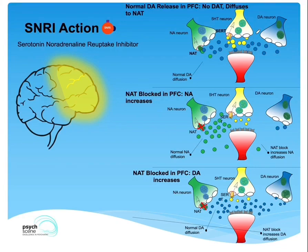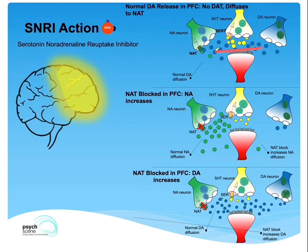But you can see here that the dopamine transporter (DAT) is missing in the prefrontal cortex. The work of DAT is done by NAT. So the noradrenaline transporter is essentially the transporter protein that will take up dopamine into the presynaptic neuron. Dopamine is also broken down by other enzymes such as COMT.